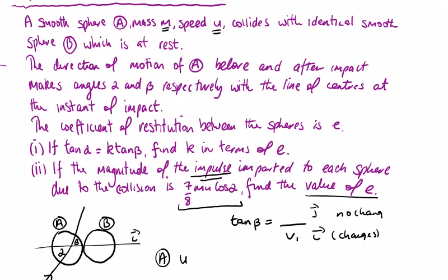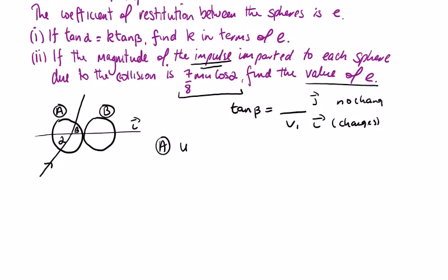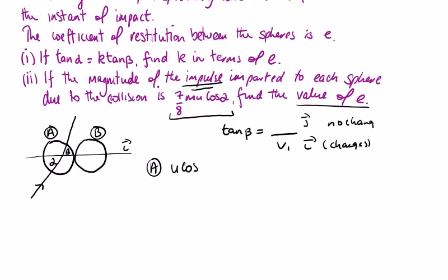They're identical so both mass m. So u cos alpha in the i direction, adjacent to alpha here, plus u sin alpha in the j direction, and that's the one that's not going to change.